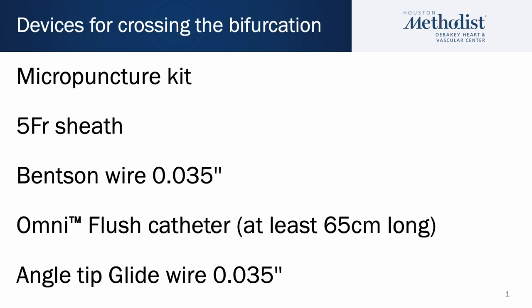We use the following devices to gain integrated access to the contralateral iliac system: micropuncture kit, 5 French sheath, Benson wire, Omniflush catheter, and an angle tip glide wire.